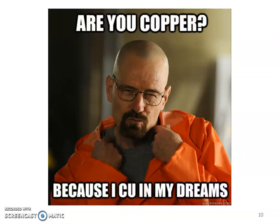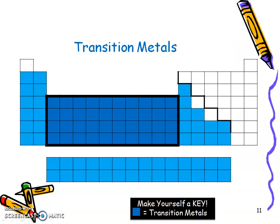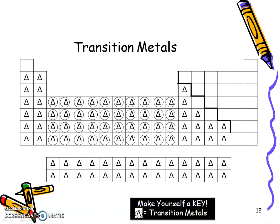Cu is the element symbol for copper. Why shade in lightly? Because the transition metals — groups 3 through 12 — I colored in a little darker. You can do a border or color in darker, then make yourself a key. If you don't have coloring pencils, put a circle around the triangle you made, to show these elements are still metals but more specifically transition metals. Pause the video and make yourself a key.